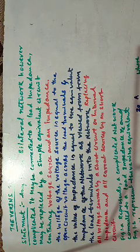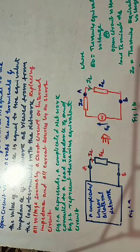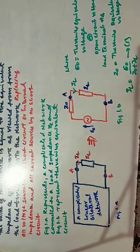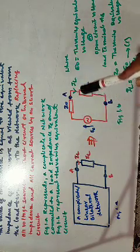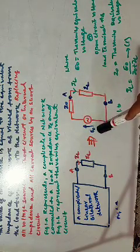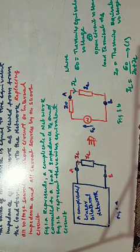This is done by replacing all voltage sources by a short circuit or an internal impedance, and all current sources by an open circuit. This figure represents a complicated network connected to a load impedance ZL, and figure 1B represents the Thevenin equivalent circuit. The statement says that any linear bilateral network, however complicated it may be, may be replaced by a simple circuit which contains the open circuit voltage and an impedance.